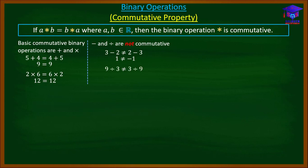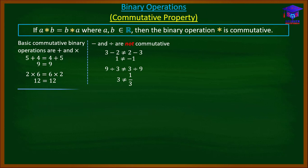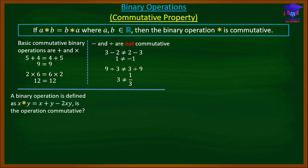Similarly, if you pick two real numbers nine and three: nine divided by three gives three, and three divided by nine gives one-third. These are not the same, hence division of real numbers is not commutative.